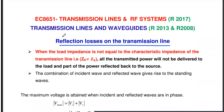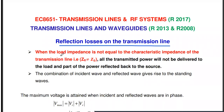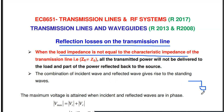We already know what is meant by reflection — the part of the incident wave that is reflected back to the source. In which condition do we get reflection? If the load impedance is not equal to the characteristic impedance of the transmission line, reflection takes place. Reflection occurs whenever ZR is not equal to Z naught.